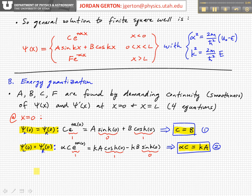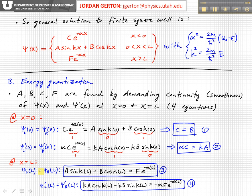Now, we can do the same thing at x equals L. So at x equals L, again, we're looking at the left and right-hand sides of that boundary. That boundary is now at x equals L. And here, we can't say anything more than just to say that a sine kL plus b cosine kL is equal to f e to the minus alpha L. And that k a cosine kL minus k b sine kL is equal to minus alpha f e to the minus alpha L.